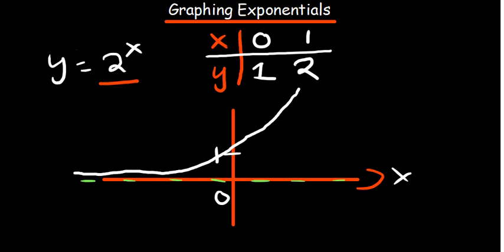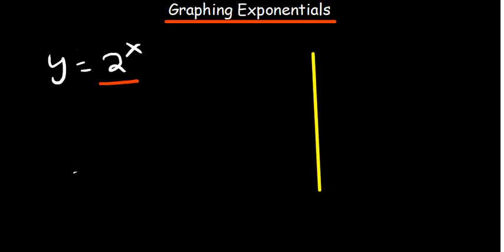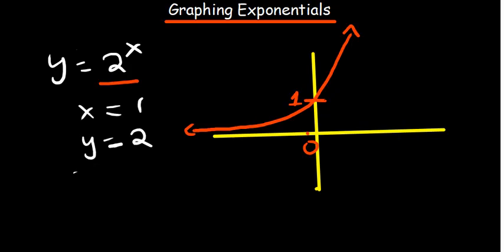The graph cuts at y equals 1 when x is 0, and passes through the point (1, 2). It comes from near the x-axis on the left and goes upward to the right. That is the way you sketch the basic exponential function y equals 2 to the power x.